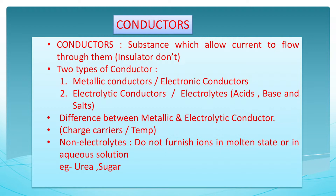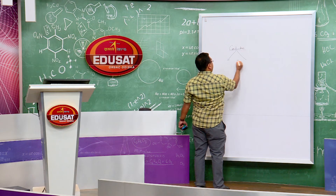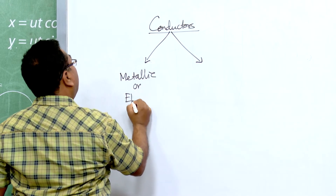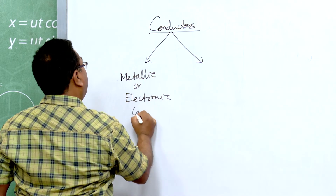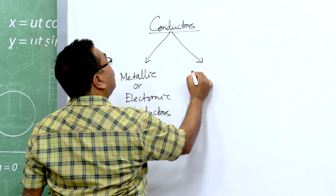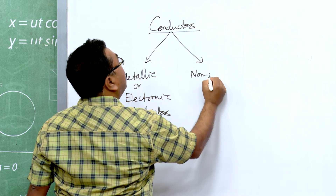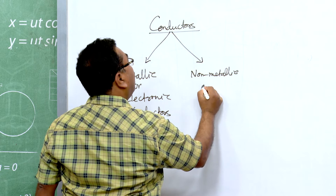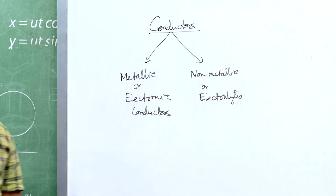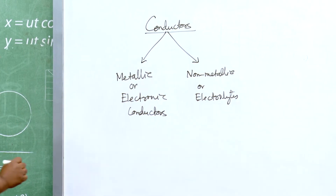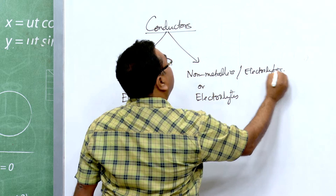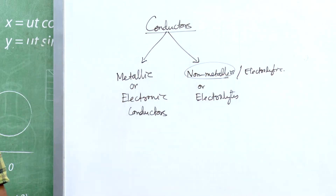Conductors are of two types: first, metallic or electronic conductors; second, non-metallic or electrolytic conductors, which are electrolytes.